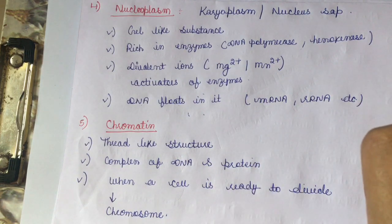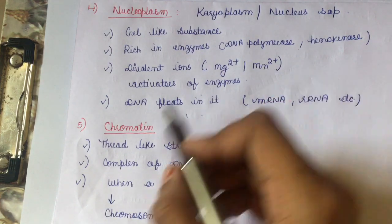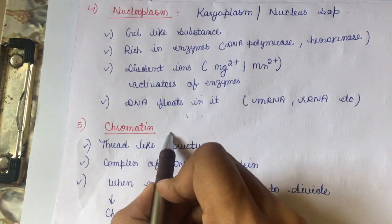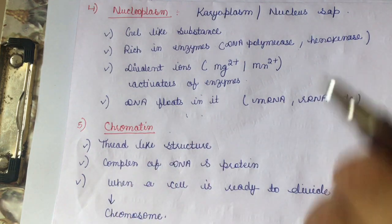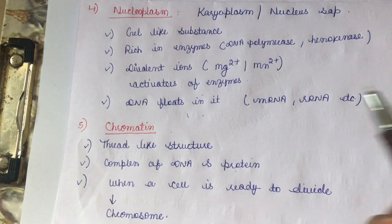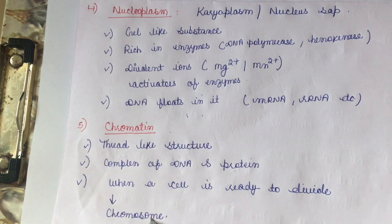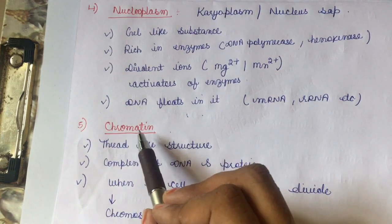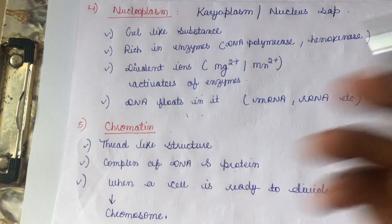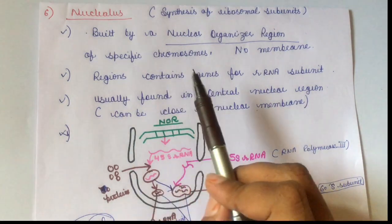Chromatin is a thread-like structure that helps in shrinking and compacting long strings of DNA so that they can fit inside the cell. DNA strands are very long and it would be difficult to fit them inside the cell without histone proteins, which help in compacting the structure. Chromatin is a complex of DNA and histone proteins. When a cell is ready to divide, chromatin condenses into chromosomes; in the resting phase, chromatin is present.